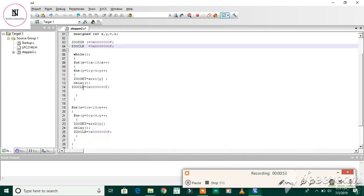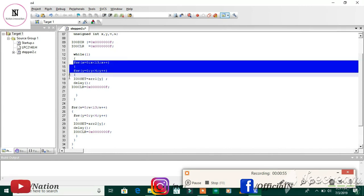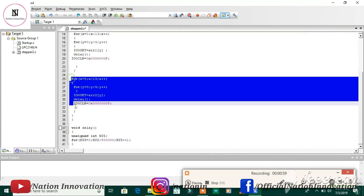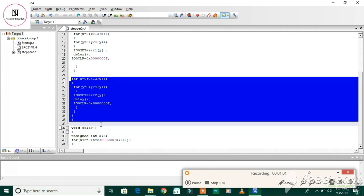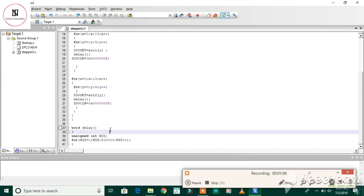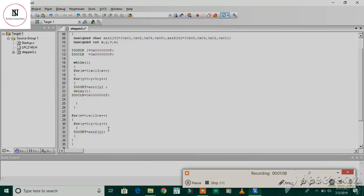And in the while one loop, this for loop part is for the clockwise rotation and this for loop part is for the anti-clockwise rotation. And we are putting some delay between the rotation. This is the whole code for the stepper motor interfacing.